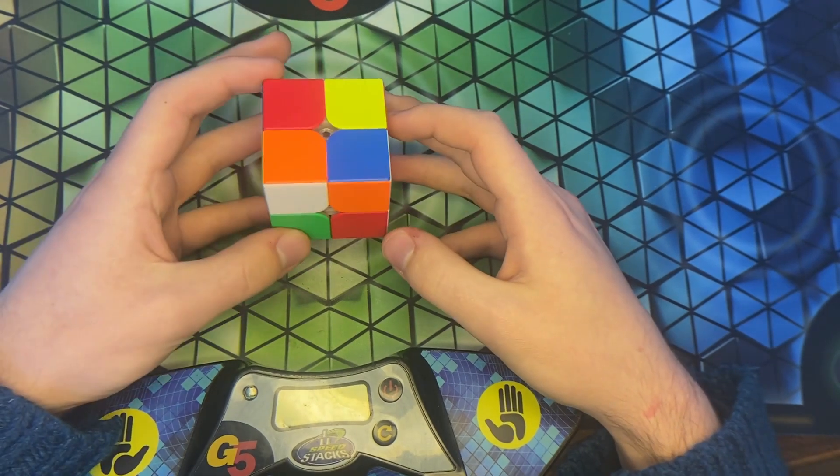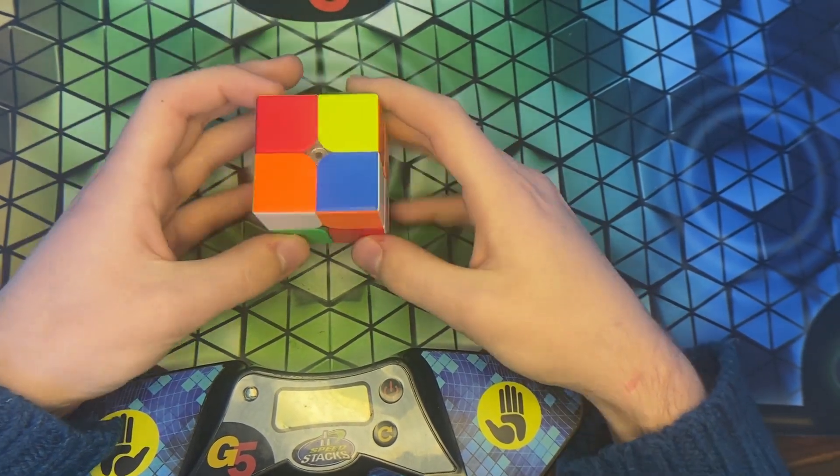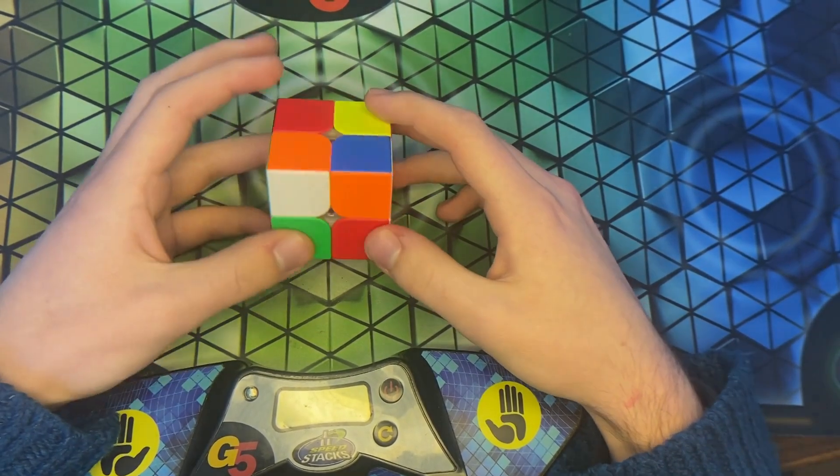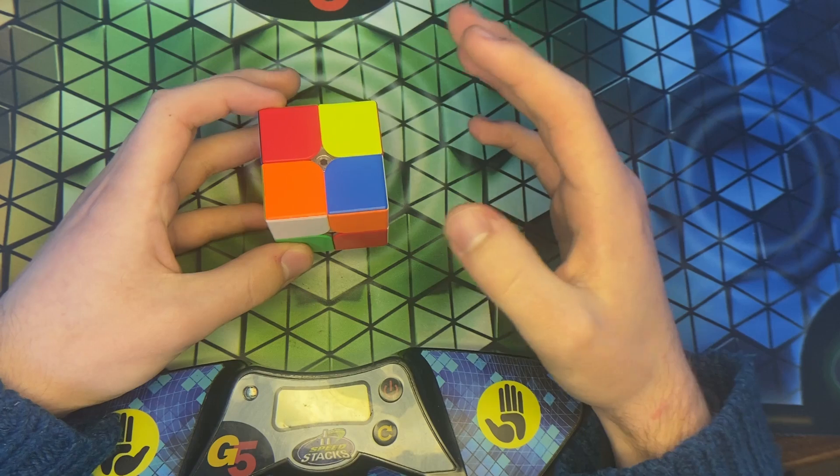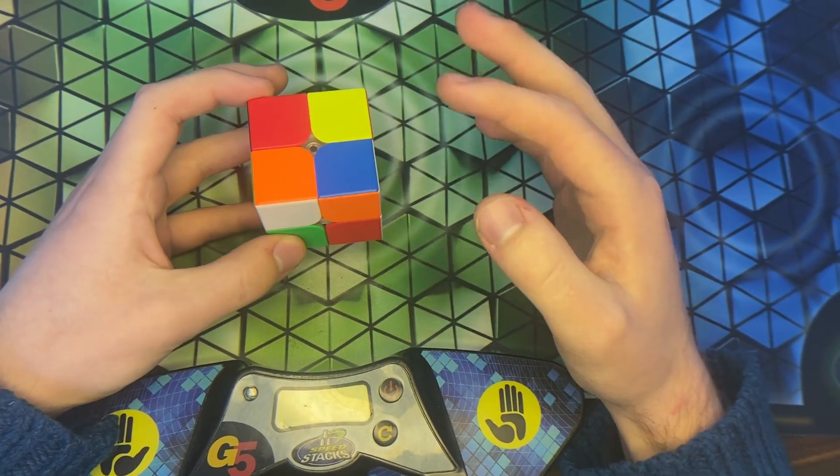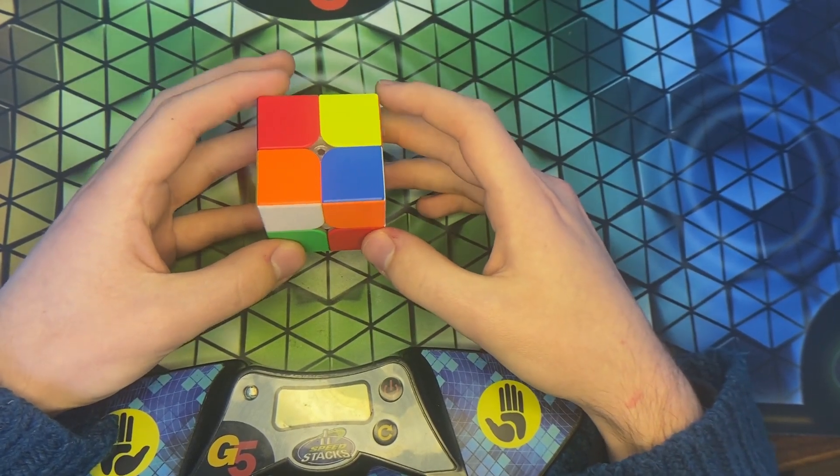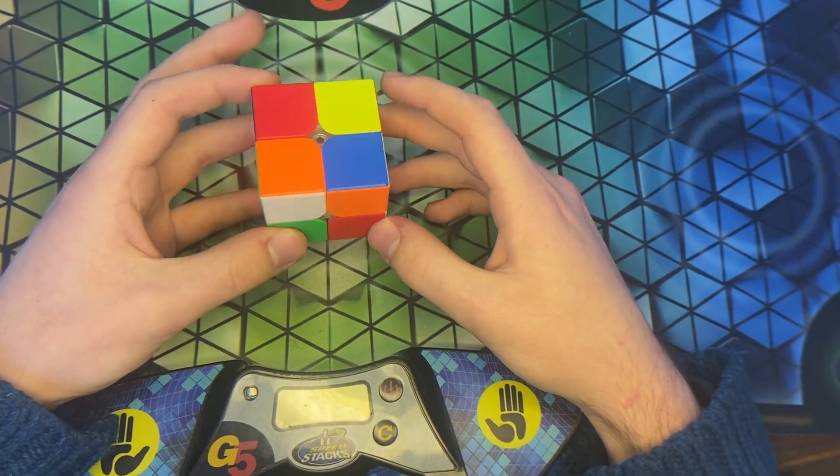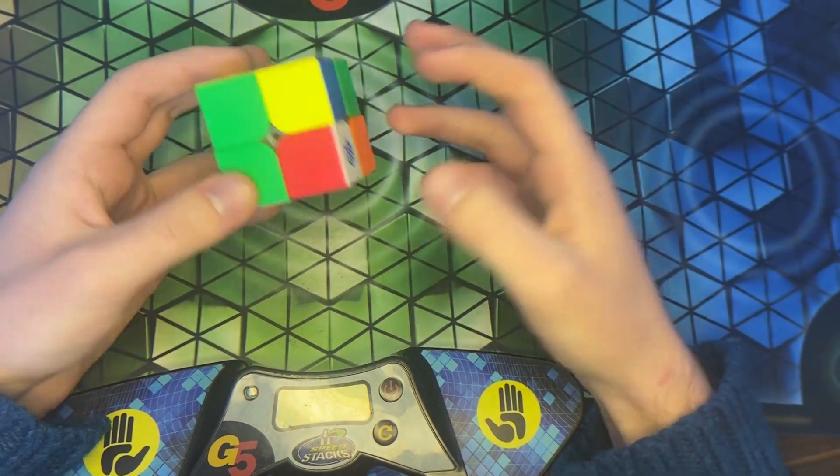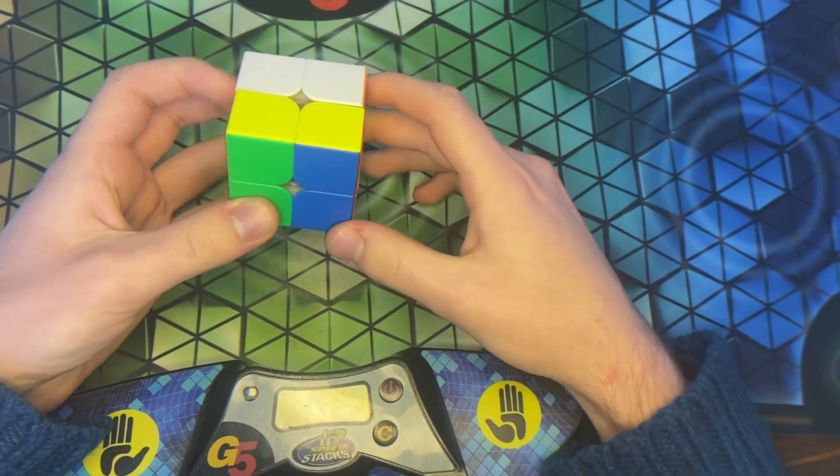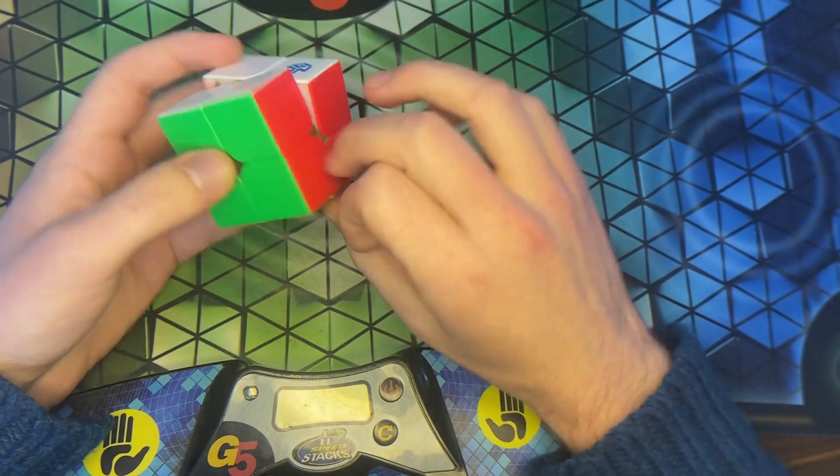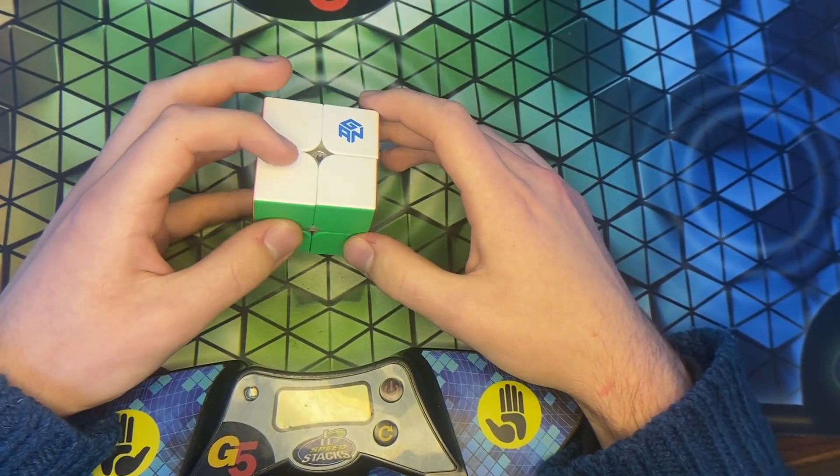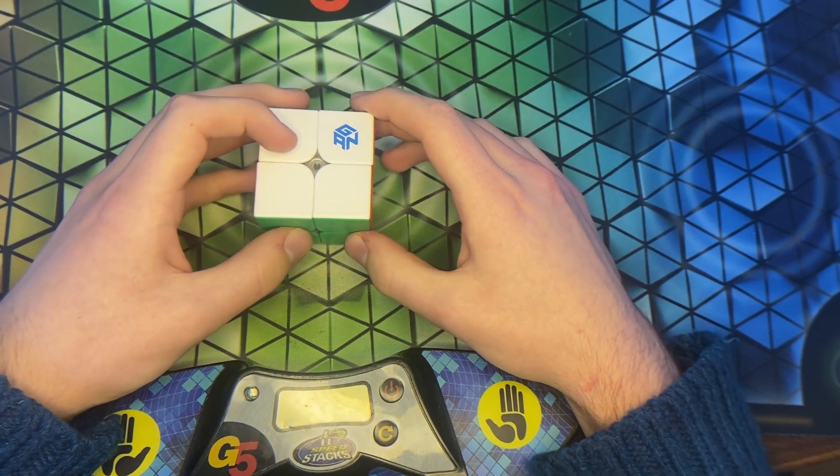I mean, it's not move-optimal on every scramble, but it gets very close. So, the idea is that you memorize every single 2x2 state, but you ignore duplicates that you can reach each other by just doing half turns on the normal and inverse. So, what this means is a solve will look like half turns, an alg, and then some more half turns. And this method has 466 algorithms.